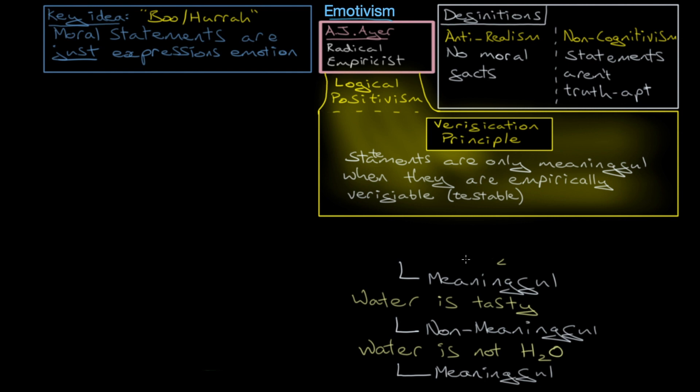Because remember, right and wrong are not the same as meaningful and non-meaningful. Okay, so those are the basic kind of theoretical underworking of emotivism, the verification principle. That statements are only meaningful when they are empirically verifiable.